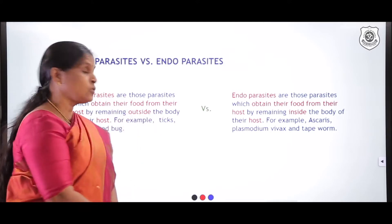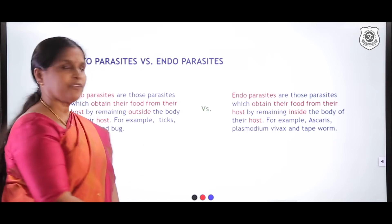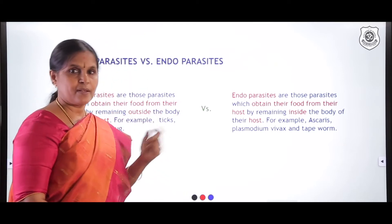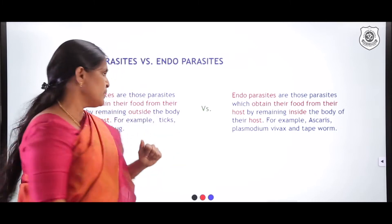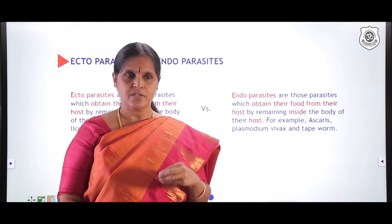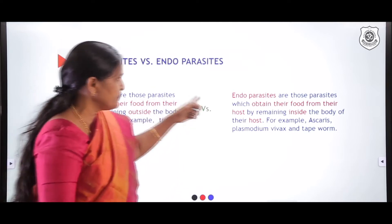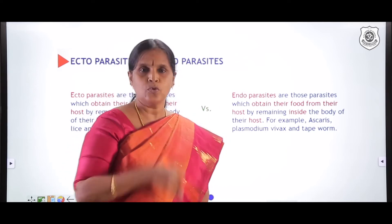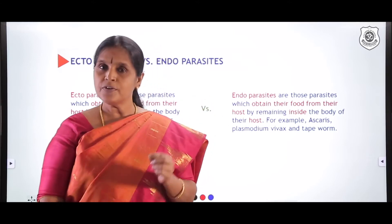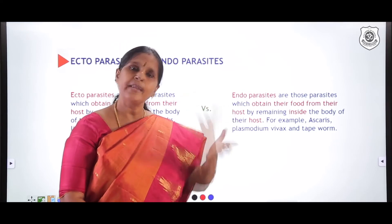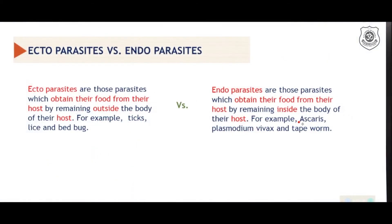Ectoparasites are those parasites which obtain their food from their host by remaining outside the body. Examples include ticks, mites found on dogs and cats, head louse, and bed bug. Endoparasites are those parasites which obtain their food by remaining inside the body of the host — they gain access into any part of the host body. Examples are Ascaris, Plasmodium, and tapeworm (Platyhelminthes), which is found inside the intestine.